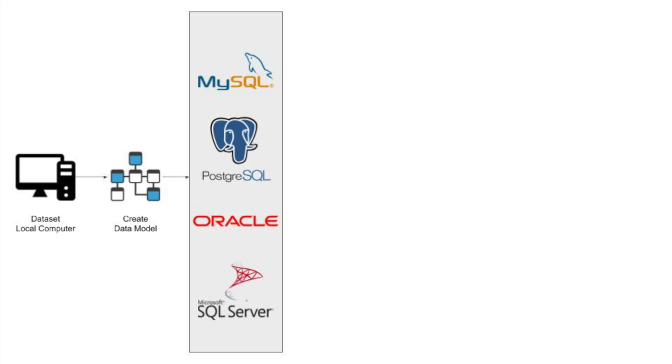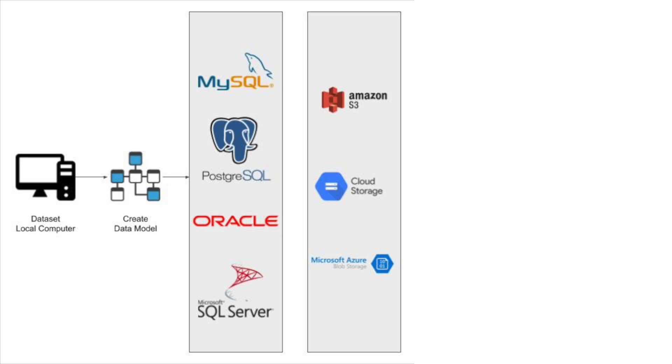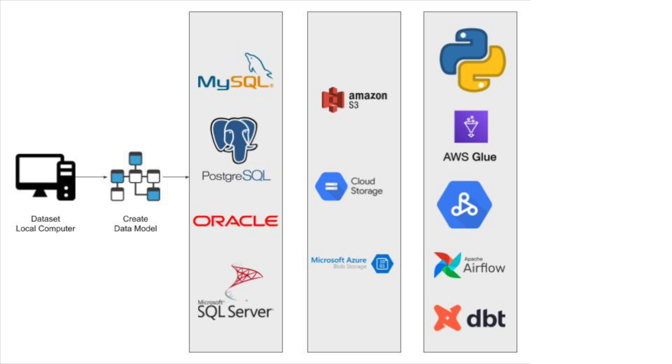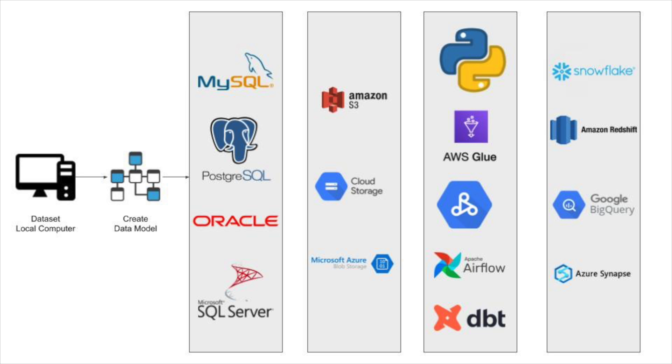This is a high-level architecture diagram. You can execute it across different clouds and swap out components as needed. For the database, you can choose MySQL, PostgreSQL, or any database you like. For file storage, you can use local system, S3, Google Cloud Storage, or Azure Blob. Transformations can be done with a simple Python script, AWS Glue, Google Dataproc, Airflow, or similar ETL tools. For final storage, you can use Snowflake, Redshift, BigQuery, or any data warehouse.